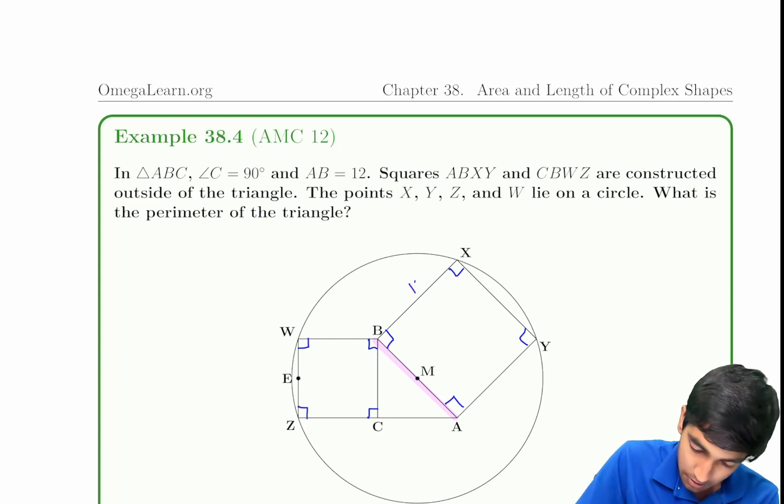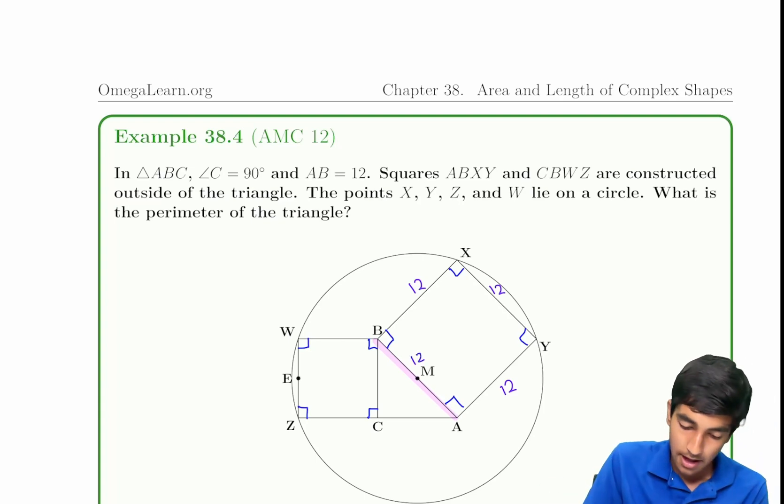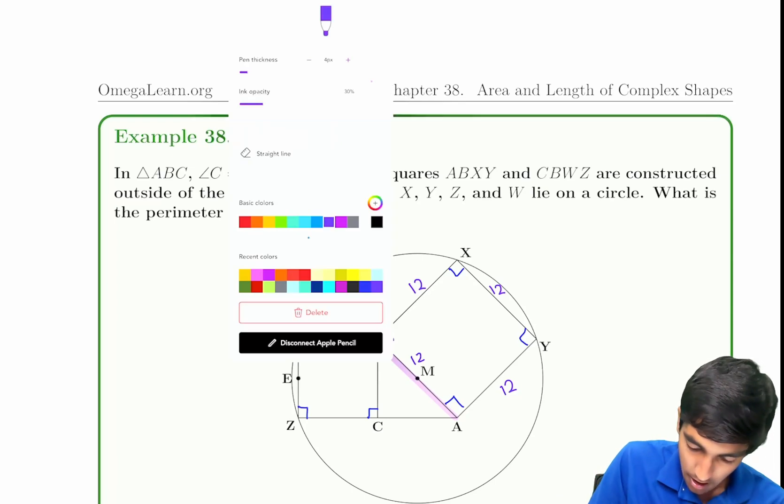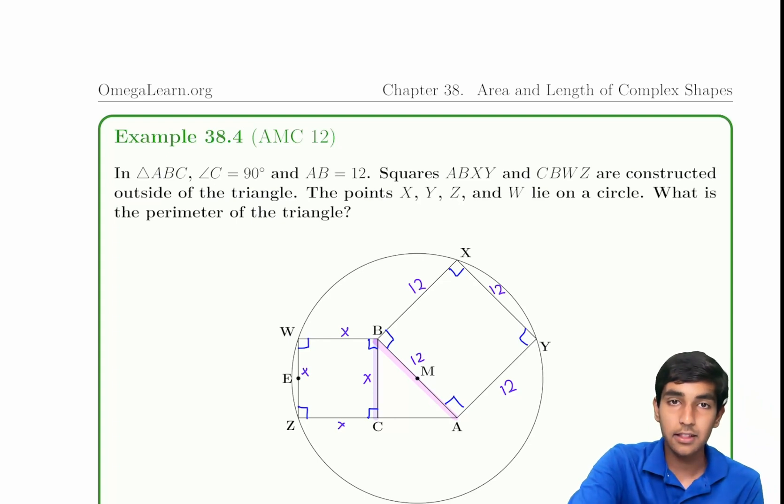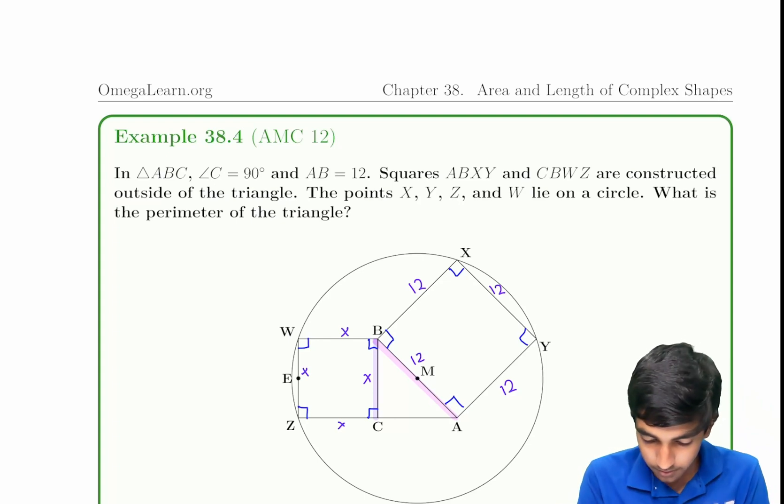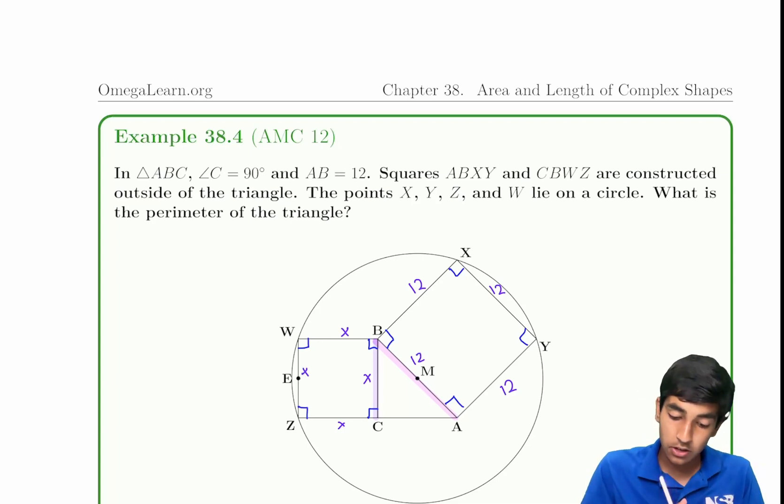This side length is 12. So let's label everything 12, 12, 12, and 12 for AB because it's the square. If this is x, by square side lengths are going to be equal. We're asked to find the perimeter. All you really have to do is find x, because once you find x, we can use Pythag to find CA, and that will give us all three sides.